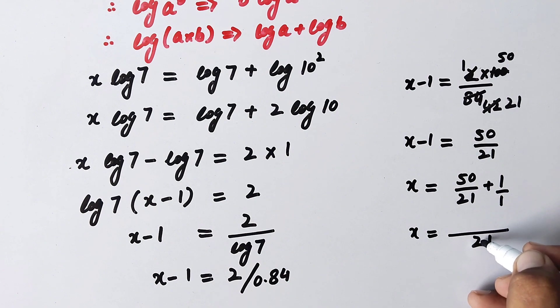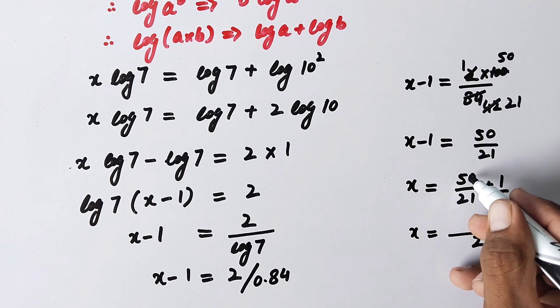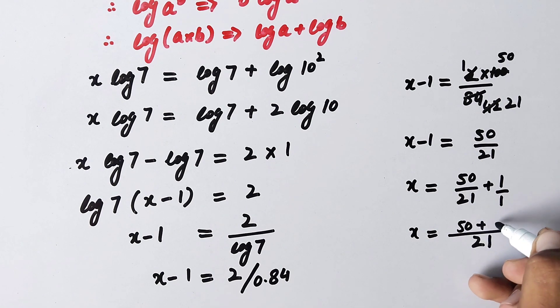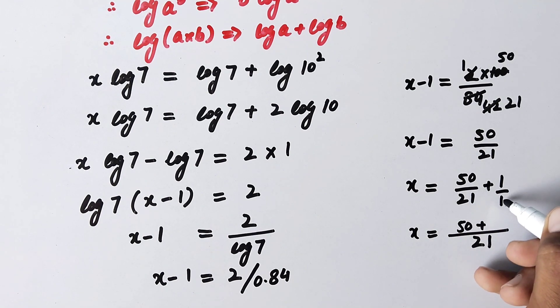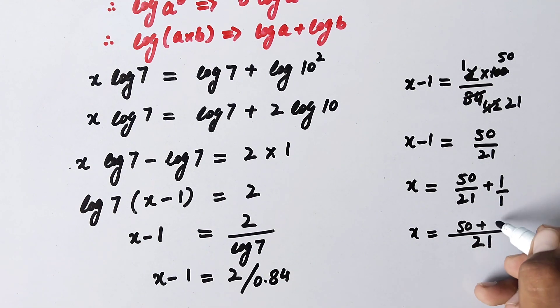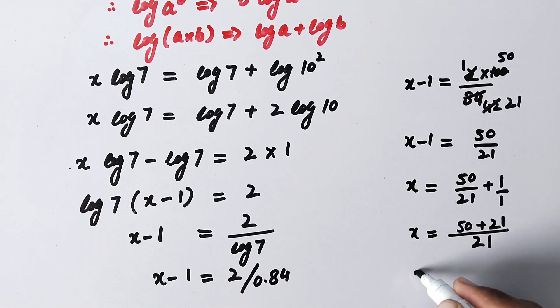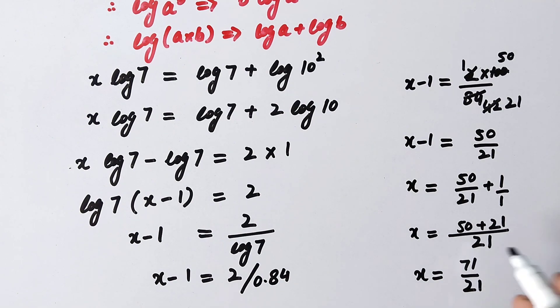And 21 divided by 21, that is 1, that is multiplied by 50, here will be 50, plus 21 divided by 1 will be 21 and multiplied by 1 here will be 21. So here x is equal to 50 plus 21 is 71 over 21, and that is the value of x, or our final answer.